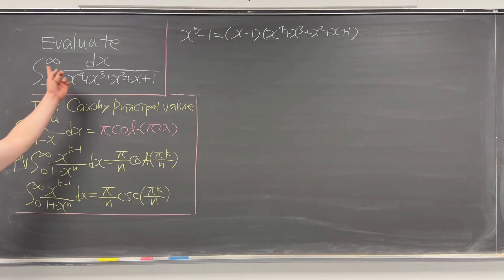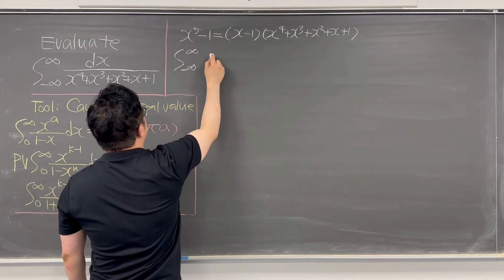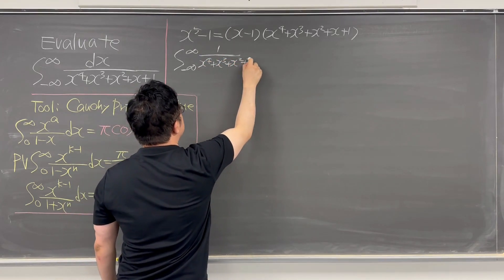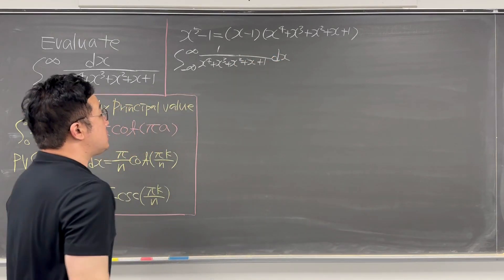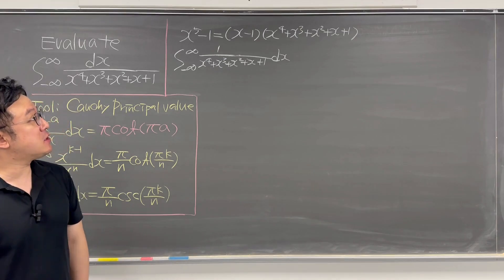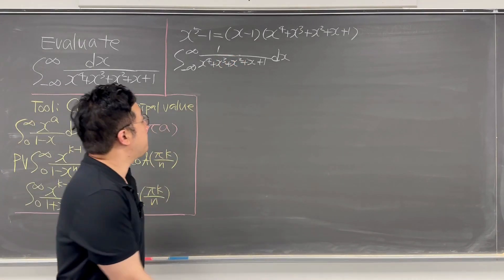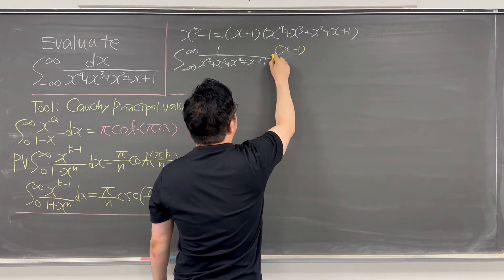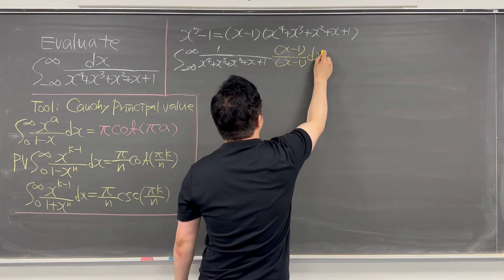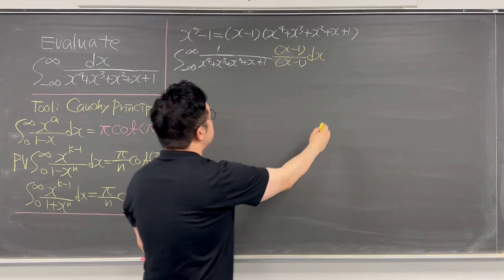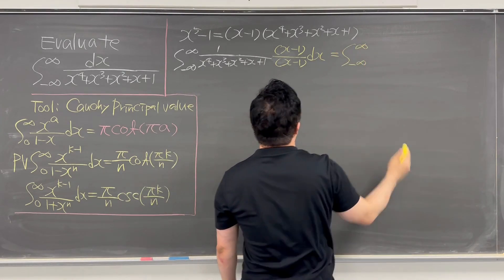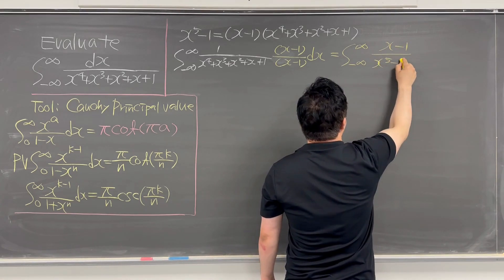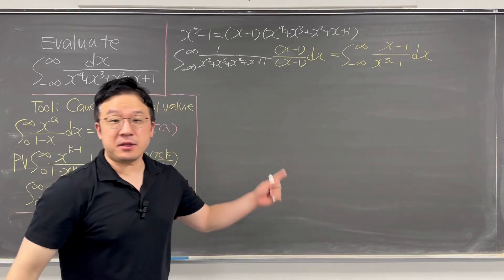Okay, so that's why for the integral we are looking for — the integral from negative infinity to infinity of 1 over x to the power of 4 plus x cubed plus x squared plus x plus 1 dx — we can multiply x minus 1 to the numerator and denominator. Multiplying x minus 1 to both gives us the integral from negative infinity to infinity of x minus 1 over x to the power of 5 minus 1 dx.